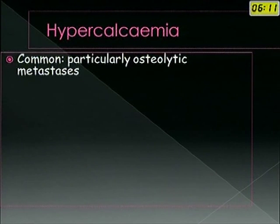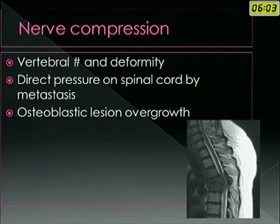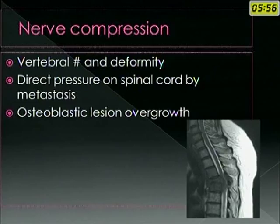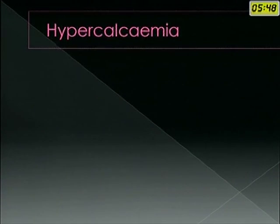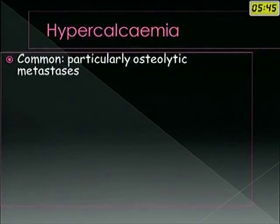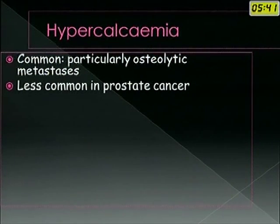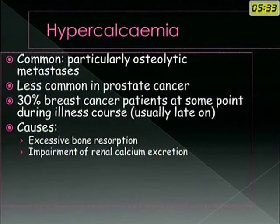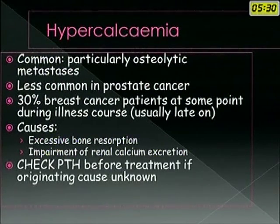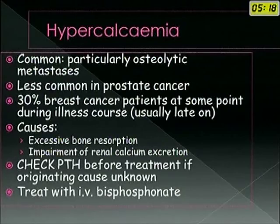Some tumors can present with metastasis in the spine causing cord compression and neurological problems. Some osteoblastic lesions can overgrow and cause compression of the vertebral column. Skull lesions can press on the foramen and cause neural compression. Hypercalcemia is very common, particularly in osteolytic metastasis — less common in prostatic cancer but almost 30% of CA breast patients develop this. It is due to excessive bone resorption and impairment of renal calcium excretion. Always look for parathyroid hormone level because parathyroid adenomas can mimic secondaries, appearing like a brown tumor, but respond very well to treatment of the adenoma.